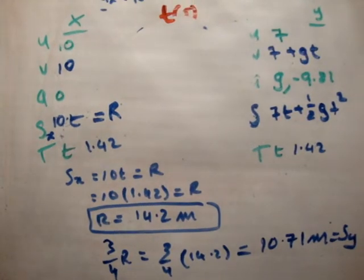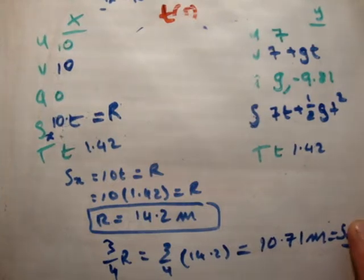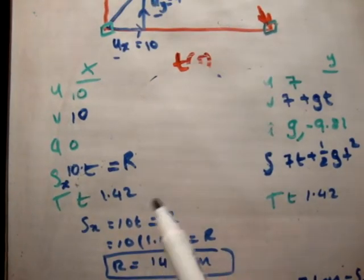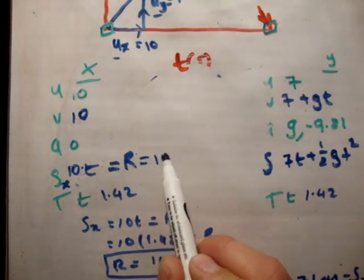Can you see that? So what we need to do is find the height when its horizontal displacement. So we need to find its height when, that's not s sub y, it's s sub x. We need to find the height when the range is equal to 10.71 meters.